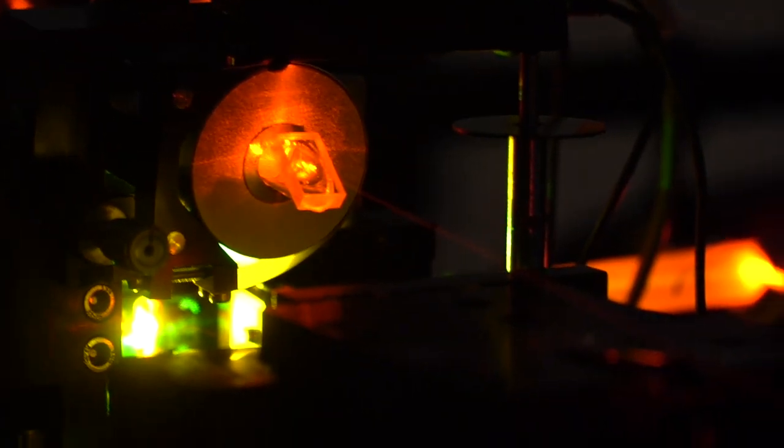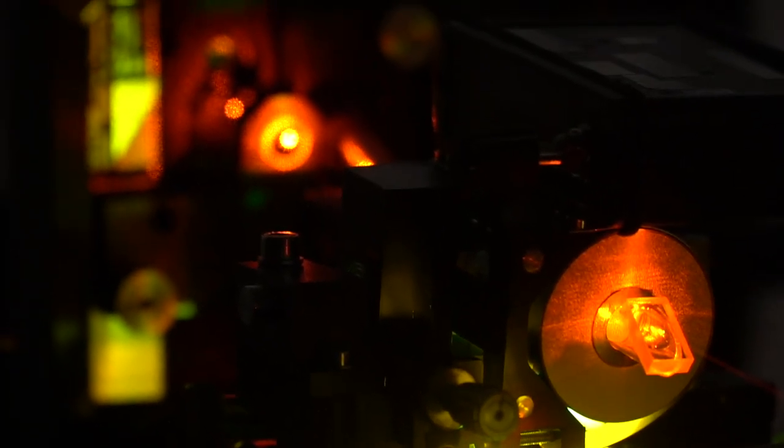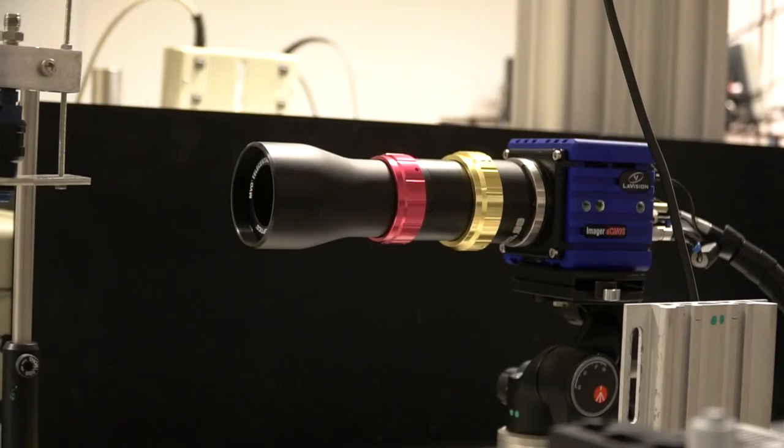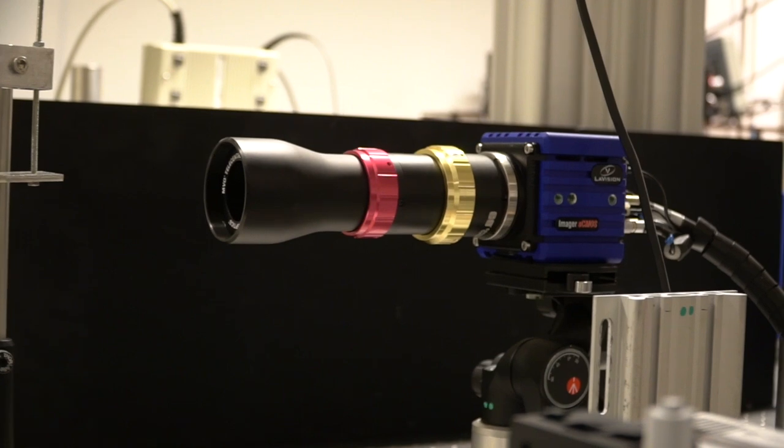When aligning a system, use an alignment laser if possible, or alternatively reduce the power of your laser for this procedure. A good option may also be to use cameras when aligning the system if possible rather than doing it by eye.